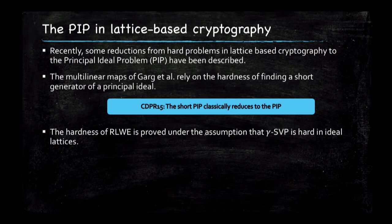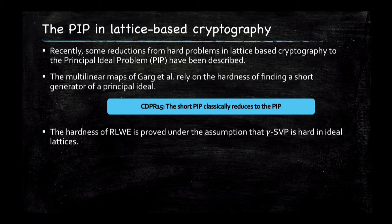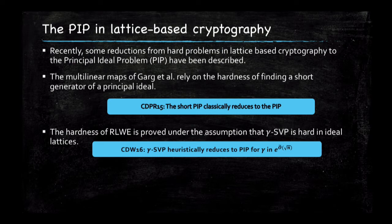There has also been another family of schemes relying on the ring learning with errors (ring-LWE) problem. The security proof of this problem relies on the assumption that it is hard to find approximate solutions to what's called the short vector problem (SVP). When we say approximate solution, we mean finding a vector whose length is within a factor gamma of the shortest vector of your lattice. Even more recent work from Cramer, Ducas, and Wesolowski showed that for some approximation factors gamma, gamma-SVP reduces to the problem of finding a generator in a principal ideal.